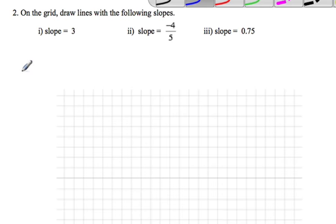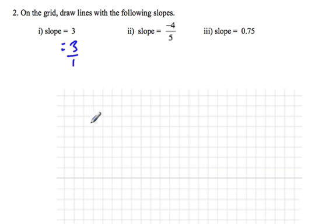Now, if you're asked to draw a line with slope 3, the first thing you should recognize is that 3 is equal to 3 over 1. So that means the rise is 3 and the run is 1.